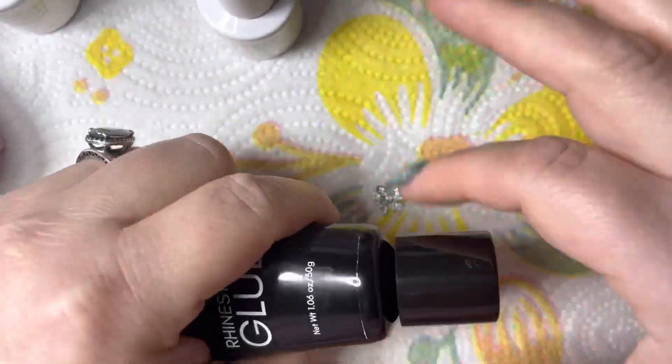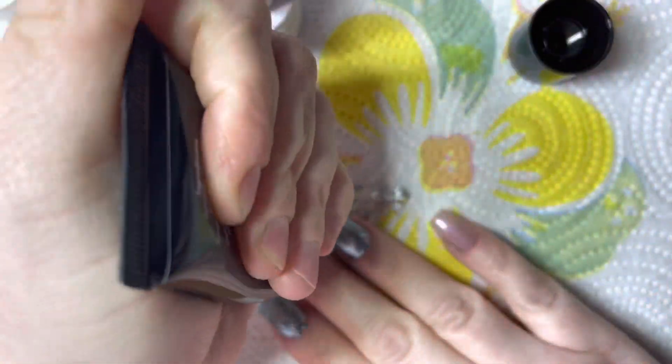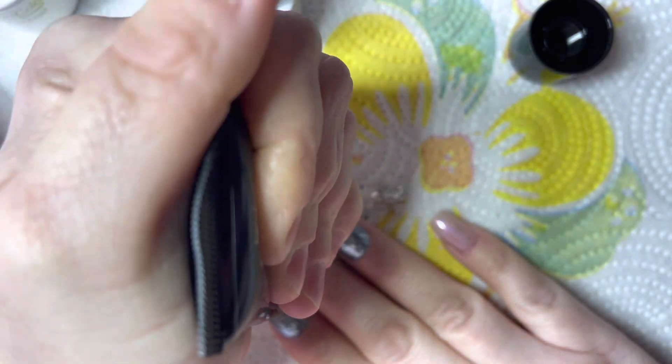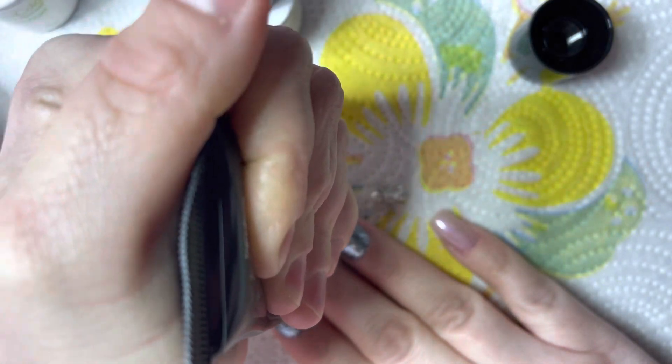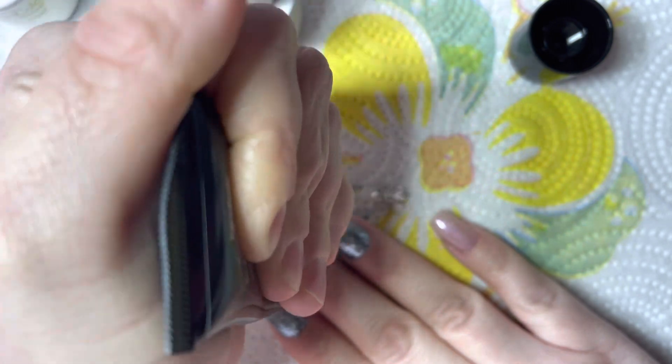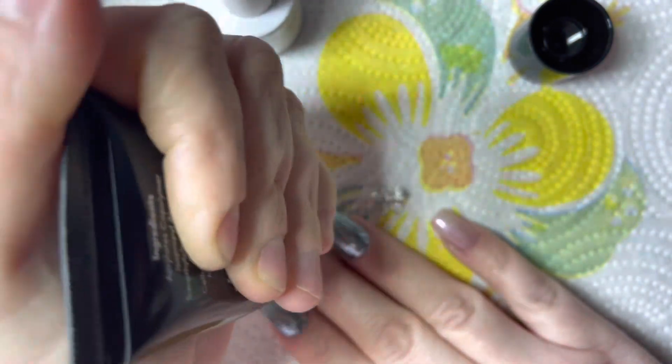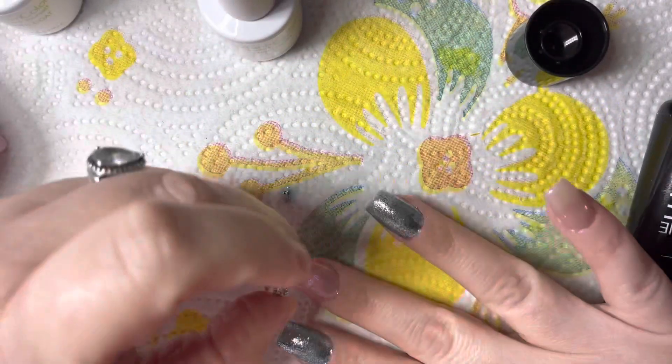So here's the charm I'm using - a little tiny bow charm. I got that off of Shein for like a dollar and some change for a 10-pack. Shein has the best, cheapest nail art that you can find. So totally worth ordering some from them.